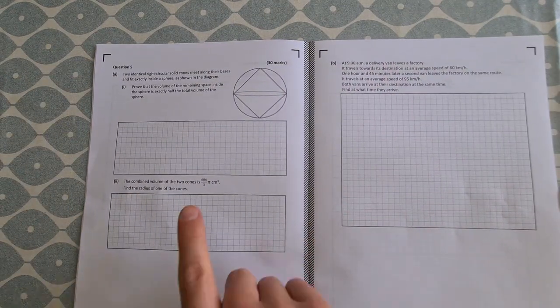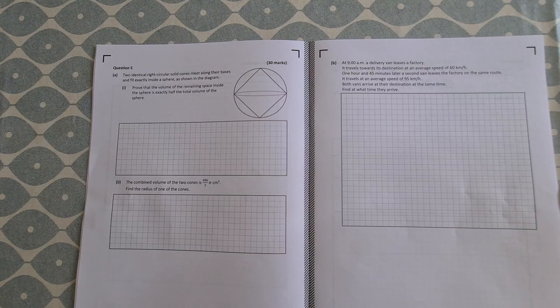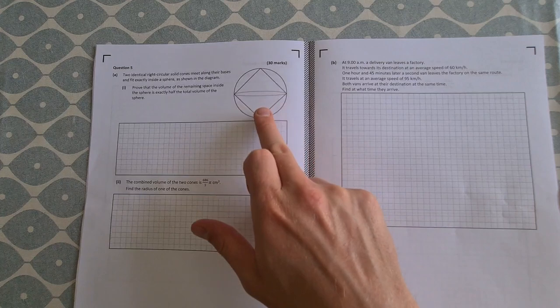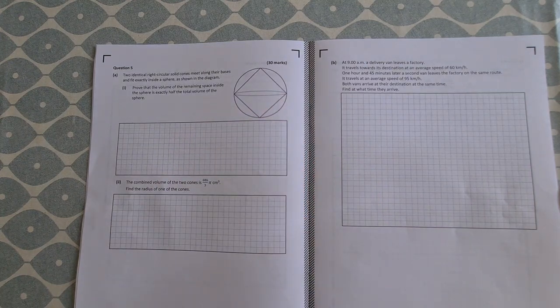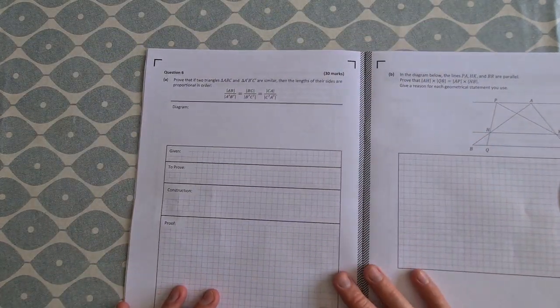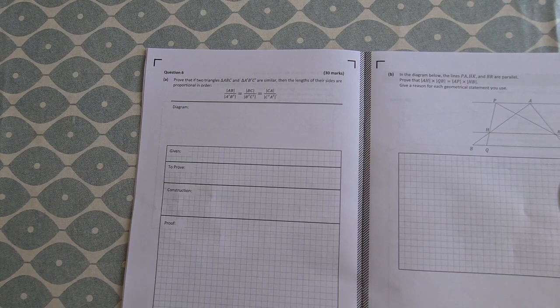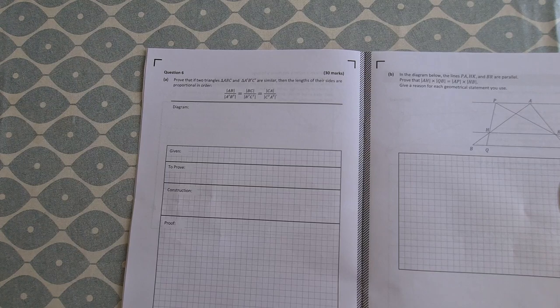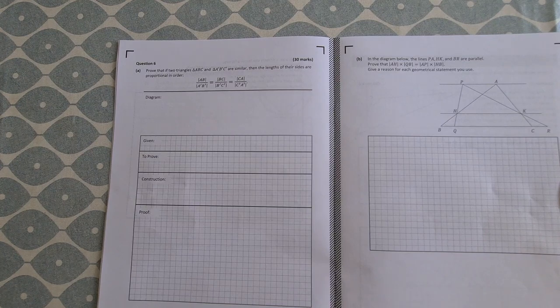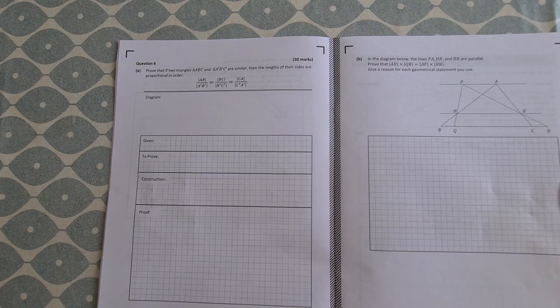Question 5. Two right circular cones within a sphere, so geometry there. Looking at that, might be a bit difficult for some students to picture it and to imagine what's going on in here. But again, not too bad of a question. Here's the proof question. So prove that if two triangles ABC and A'B'C' are similar, then the lengths of their sides are in proportional order. So hopefully you should know that proof. And if you did, you would have been able to do it okay. But it is the type of question that if you didn't learn the proof, you wouldn't be able to attempt it really.